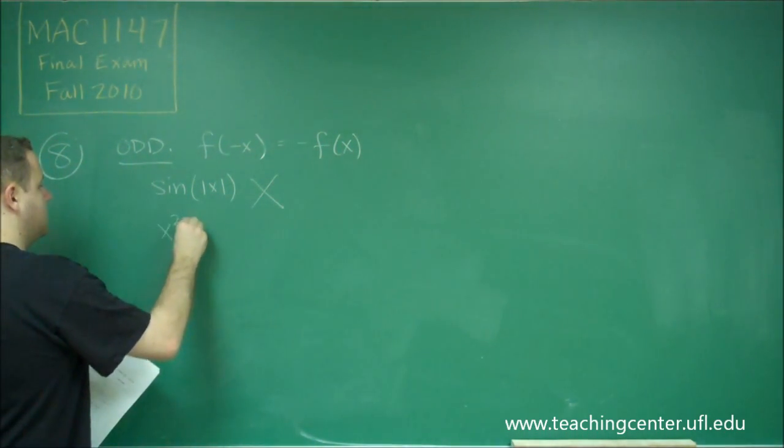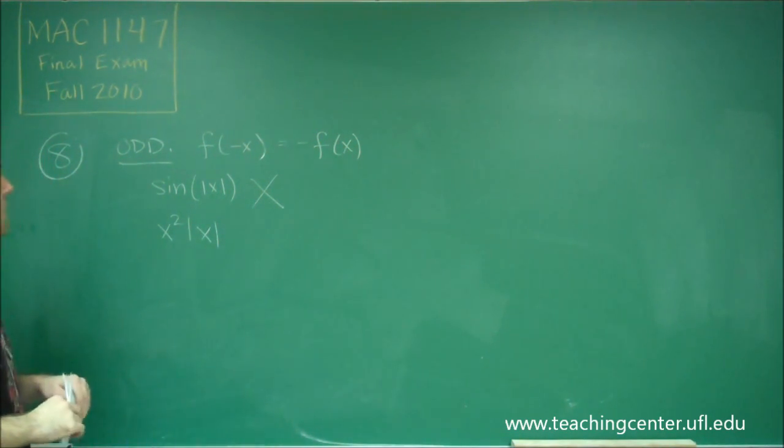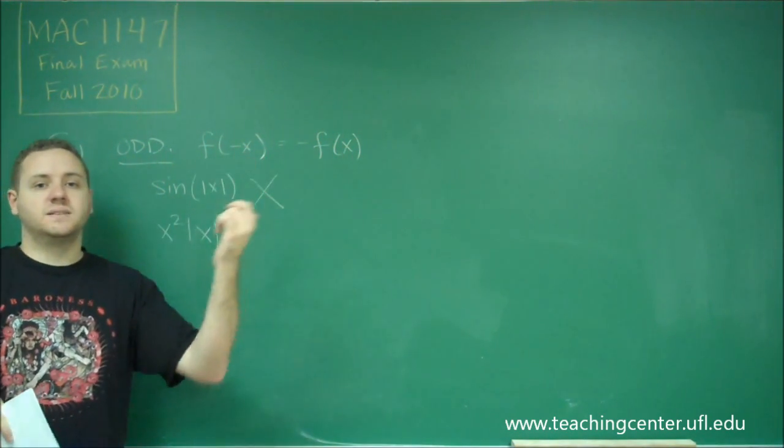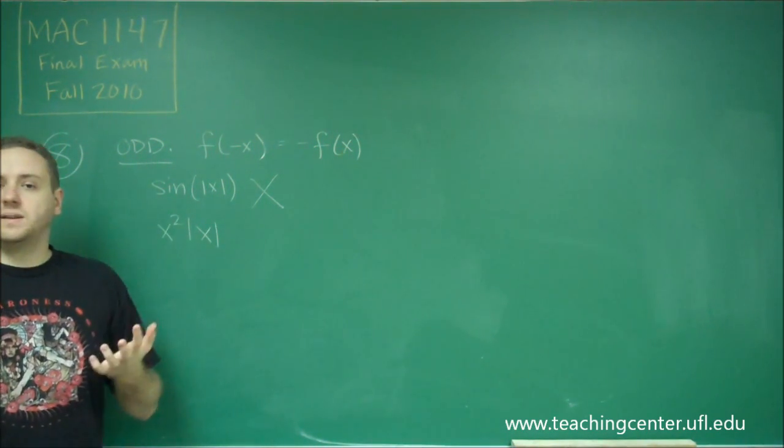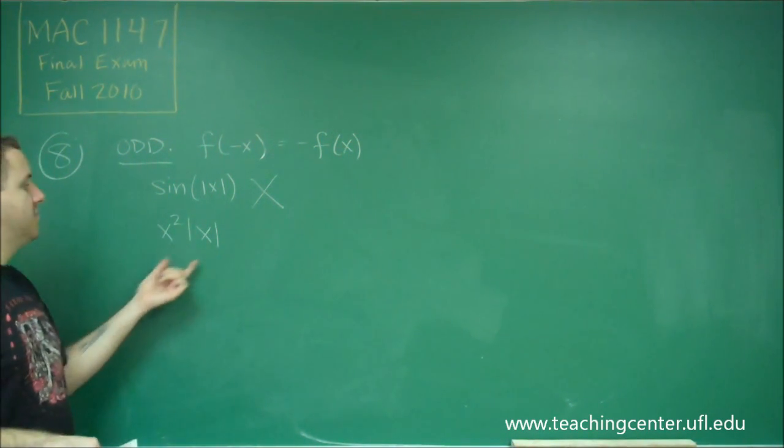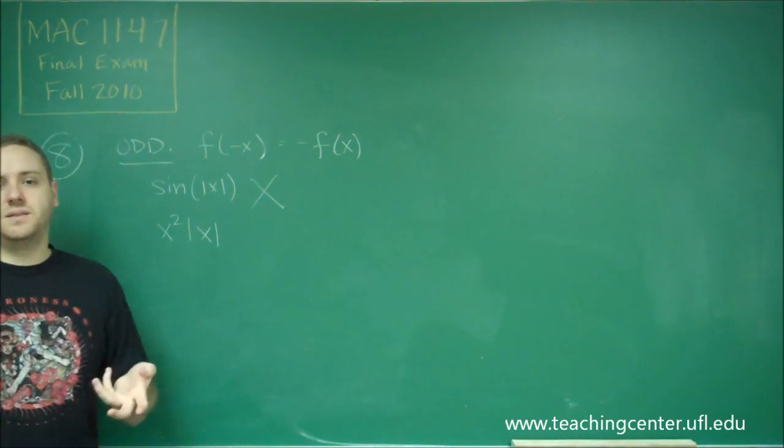Next, we have x squared times absolute value of x. Again, if we substitute minus x in for x, squaring something that was negative gives it the exact same number. Absolute value of something that was negative makes it the exact same number.